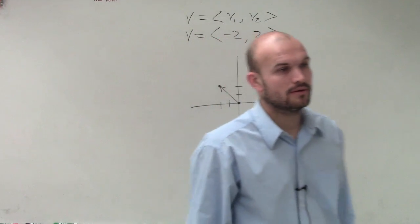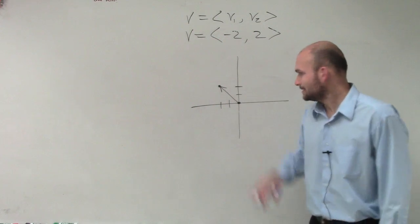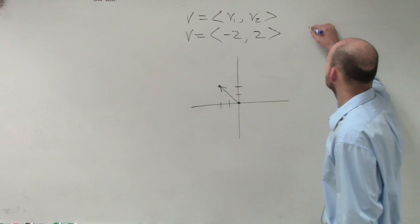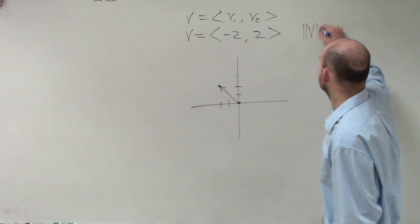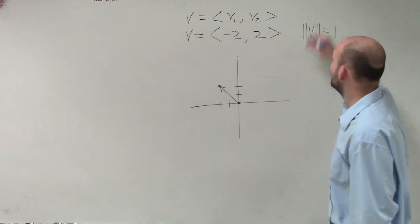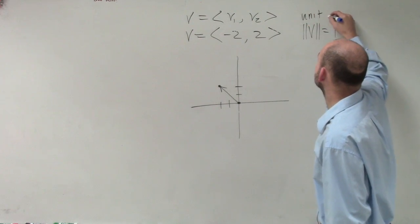So now, ladies and gentlemen, remember, if the magnitude of v is equal to 1, then we have a unit vector.